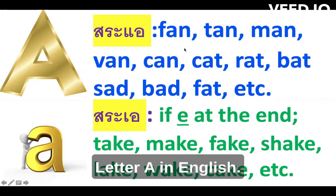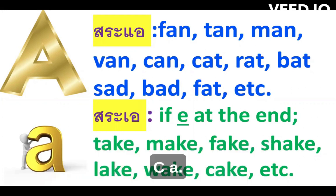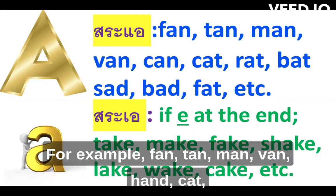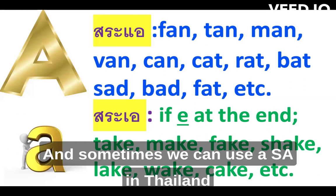In English, the 'a' sound — in Thailand we say this sound a lot. For example: fan, tan, man, van, and cat, rat, fat, sad, bad. There are many words with this sound.